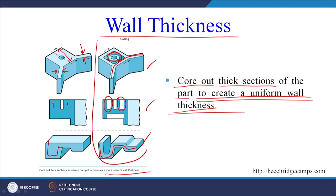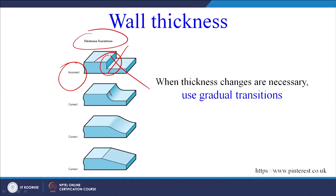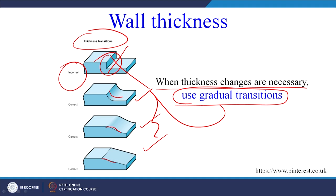Ensuring uniform wall thickness will help avoid defects such as warping and cracking, leading to good product quality. When thickness changes are necessary, use gradual transitions. A very sharp transition in the cross section is not recommended; gradual transitions, as illustrated, are always advisable.